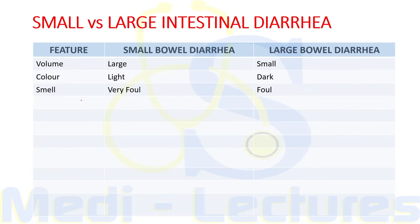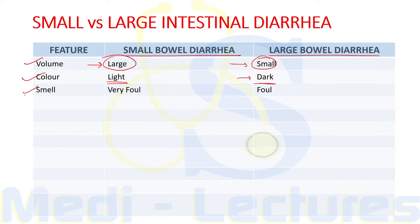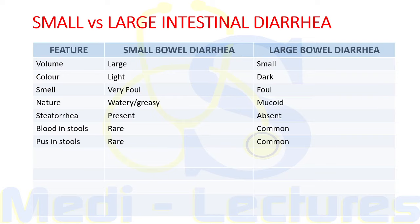Now let's see the difference between small bowel and large bowel diarrhea. Regarding volume: small bowel diarrhea has large volume and large bowel diarrhea has small volume. Color is light in small bowel and dark in large bowel. Small bowel diarrhea is more foul-smelling. The nature of small intestine diarrhea is watery and greasy due to steatorrhea, since fat cannot be absorbed. Blood and pus are rarely present.